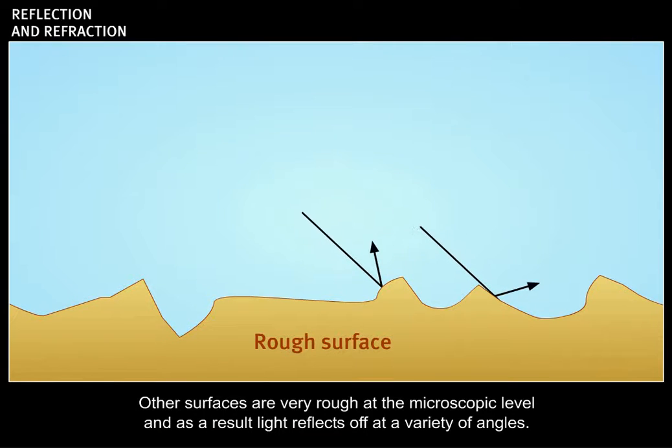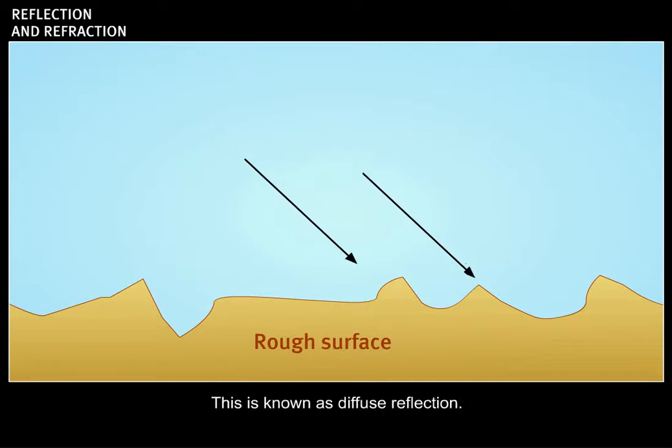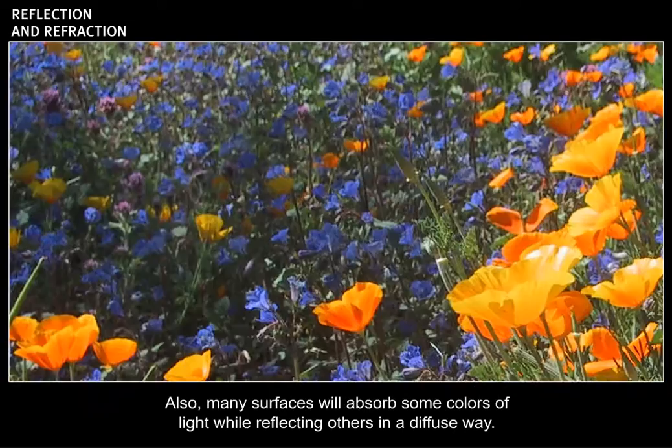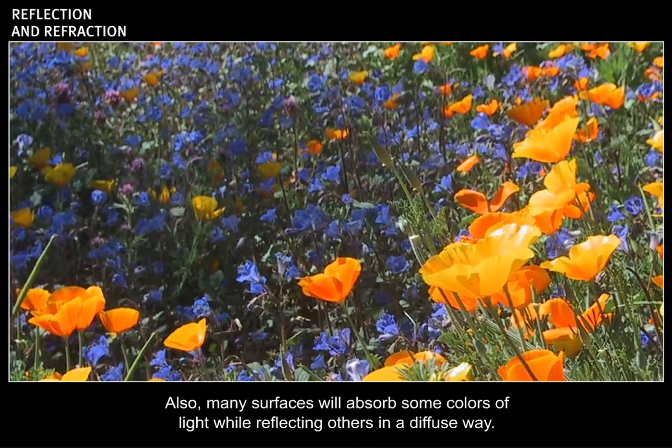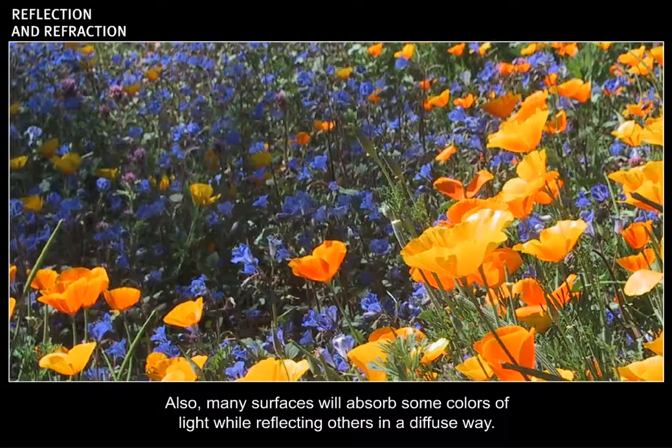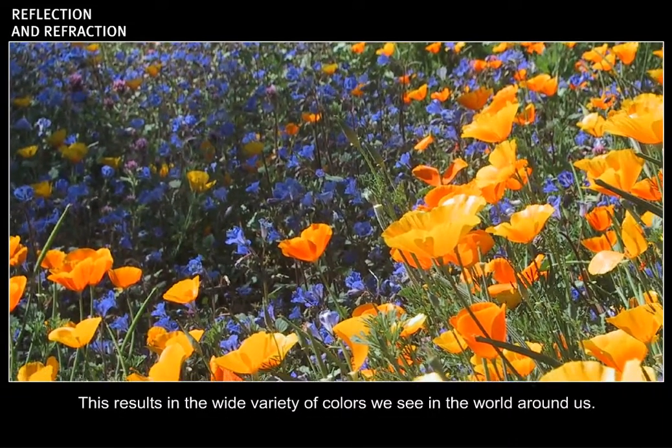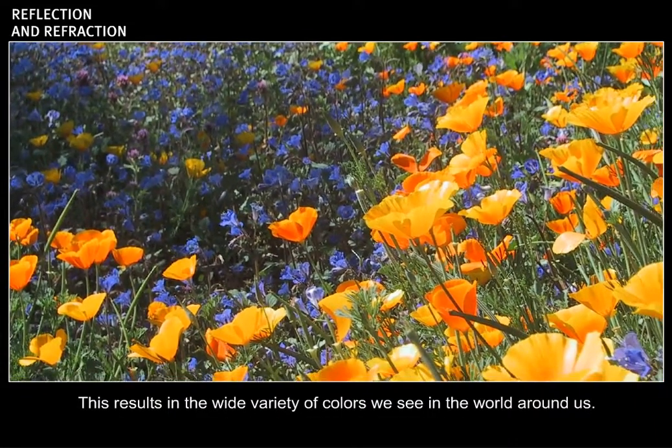Other surfaces are very rough at the microscopic level, and as a result, light reflects off at a variety of angles. This is known as diffuse reflection. Also, many surfaces will absorb some colors of light while reflecting others in a diffuse way. This results in the wide variety of colors we see in the world around us.